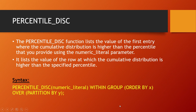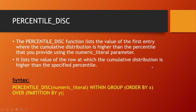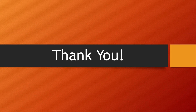Percentile disc. This function lists the value of the first entry where the cumulative distribution is higher than the percentile you provide using a numeric literal parameter — in other words, it lists the value of the row at which the cumulative distribution is higher than the specified percentile. The syntax is: PERCENTILE_DISC(numerical literal) WITHIN GROUP (ORDER BY x) OVER (PARTITION BY y). Thank you, that's all.